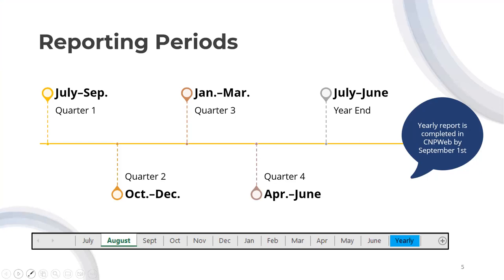The worksheet we'll be talking about is separated by month. It can be filled out at your convenience, whether monthly, quarterly, or yearly. Best practice would be monthly — it's much easier to make sure everything matches, rather than finding out at the end of the year that you have a mistake in March and have to go back through many months to fix it. The yearly tab, highlighted in blue, will compile all months together for you to complete the financial report in CNPweb. As a reminder, the CNPweb annual report is due by September 1st, usually after all the journal entries are completed by the business office to close out the year.